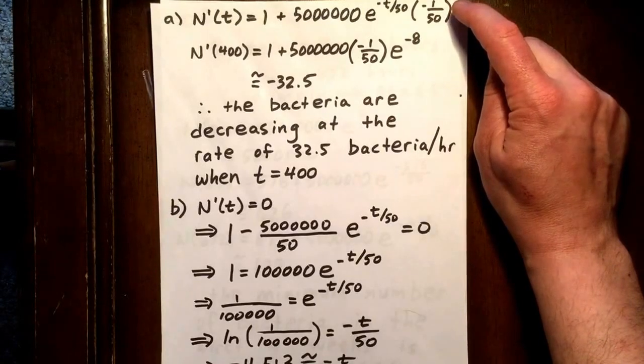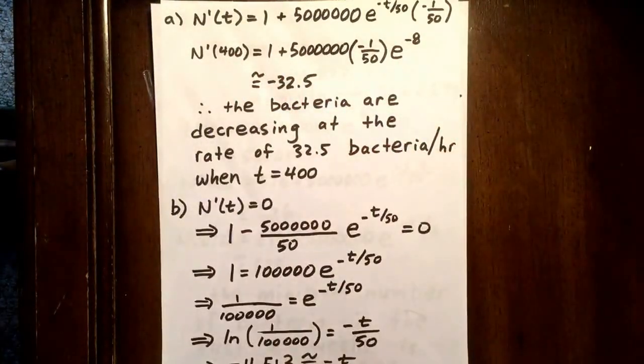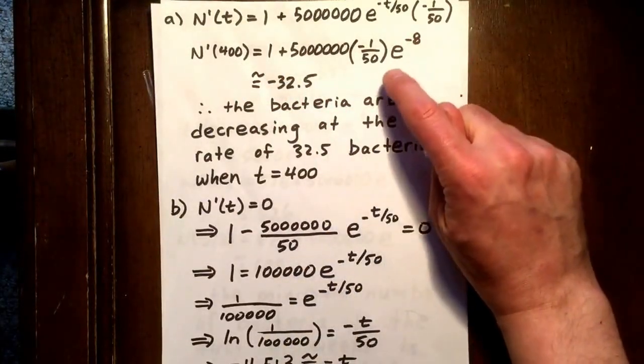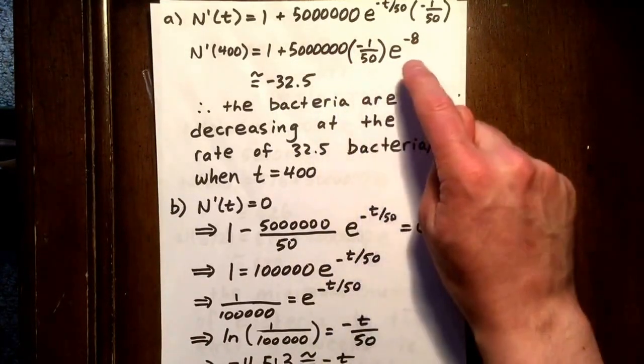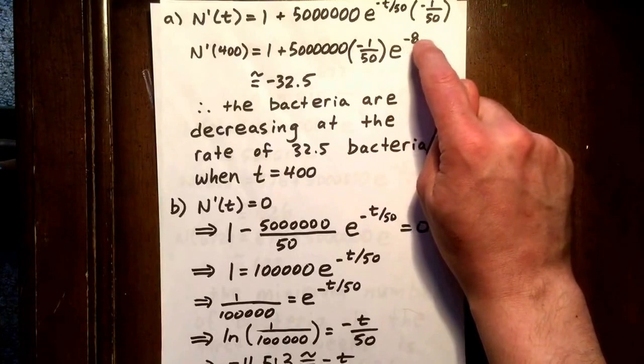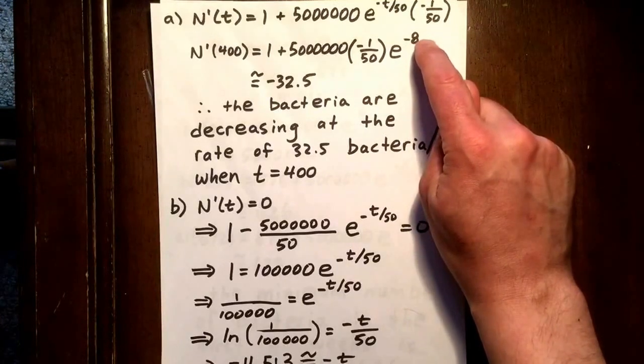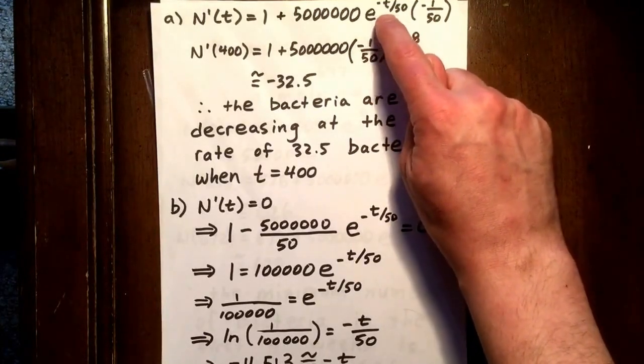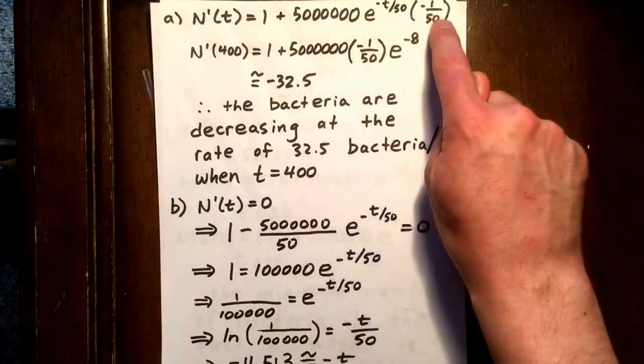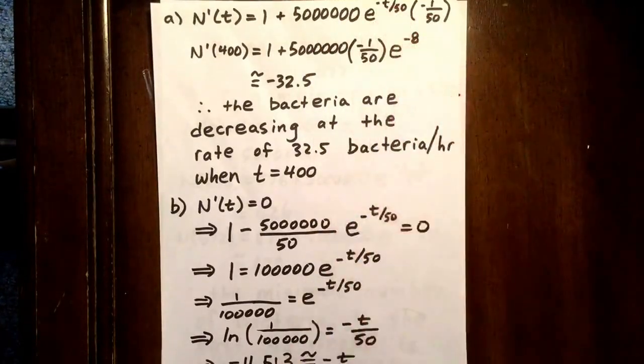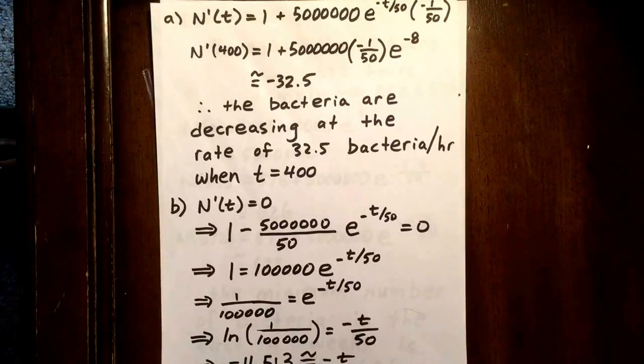So what we can do now is we can let t equal 400. So we get 5,000,000 times negative 1 over 50 times e to the exponent negative 8, the reason being negative 400 over 50 is negative 8. So 5,000,000 times negative 1 over 50 times e to the negative 8, and that number is approximately negative 32.5.